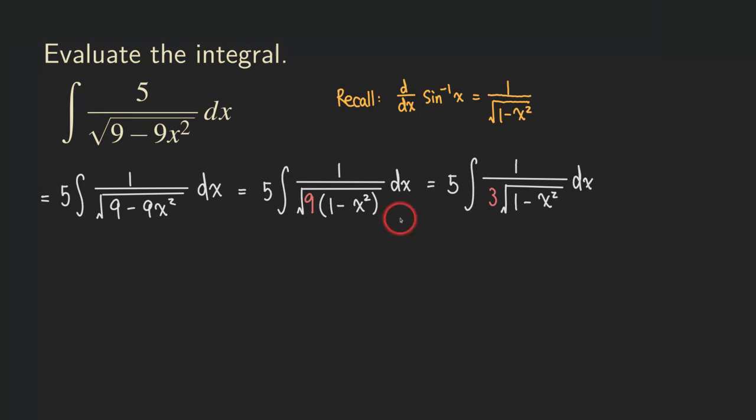That's nice. As you can see, we have 1 over the square root of 1 minus x squared, which is the same function as this one. Now, what about the 3? The 3 can actually be taken outside the integral. But the 3 belongs to the denominator, so when we take it outside we're factoring out 1 over 3. So we get 5 over 3 times the integral of 1 over the square root of 1 minus x squared dx.